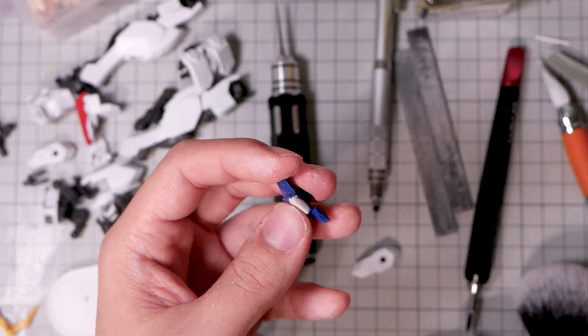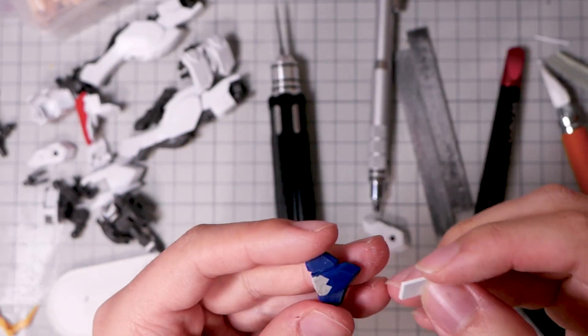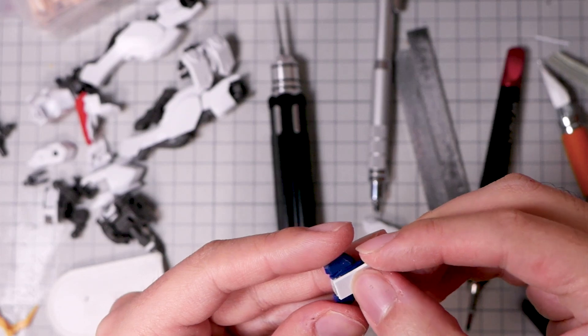Now let's do some proportion work. The chest feels a bit flat, so I'm going to add a whole one millimeter plate to this middle part.